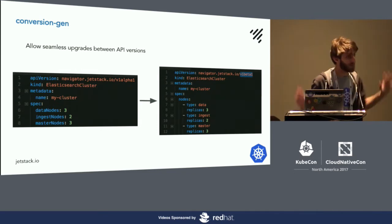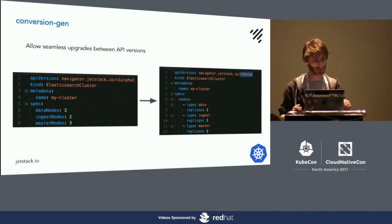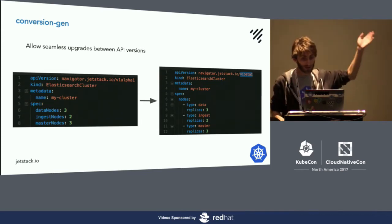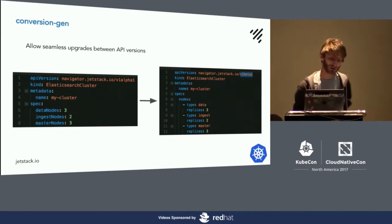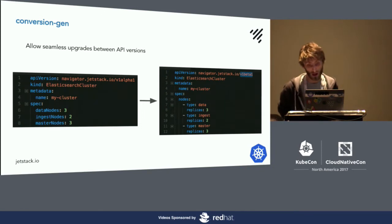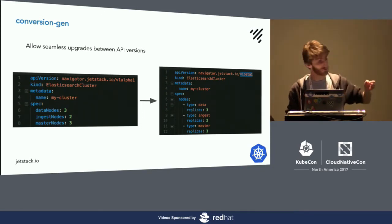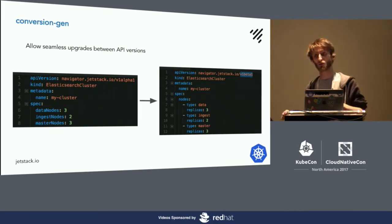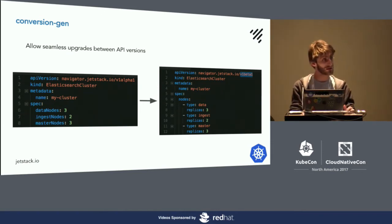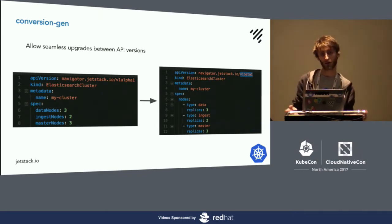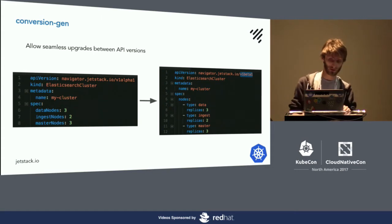The conversion generator is an exciting one if you get excited about APIs and maintenance. Say we've written v1 of our Elasticsearch cluster resource type with simple data nodes and ingest nodes, and we want to change that to something more structured. Conversions allow us to do this without causing massive problems for our users — the users can still go and create the old resource type and everything continues working. That's super powerful. It means you can more confidently push out an API and get users on it without worrying you'll break everything when you realize you've done something wrong.